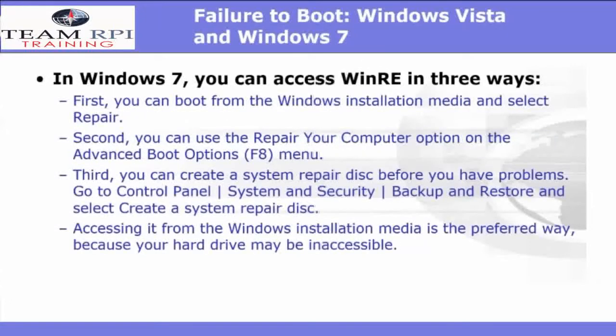In Windows 7, you can access WinRE in three ways. First, you can boot from the Windows installation media. Second, you can use the Repair Your Computer option on the Advanced Boot Options menu, usually by pressing F8. Third, you can create a system repair disk before you have the problems. This is probably the best idea, because when you have a problem, your hard drive is probably not going to be accessible.